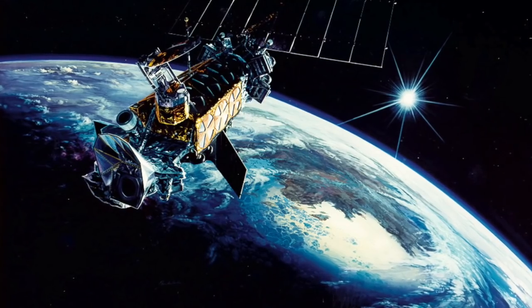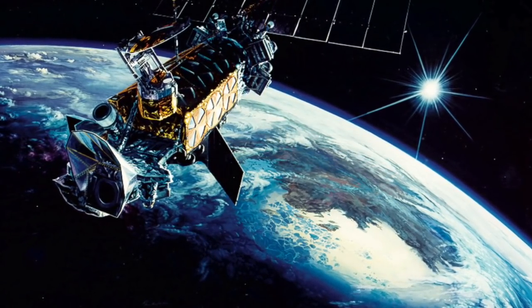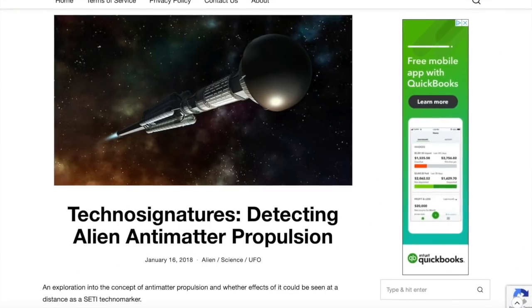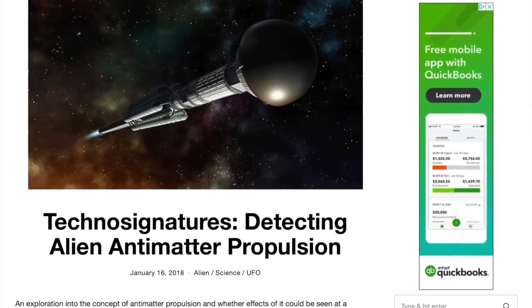When we look at newsintact.com, the headline reads: 'Techno Signatures: Detecting Alien Antimatter Propulsion.' The question then becomes: is this truly alien, or is it not? It might actually be proposed as some type of unknown energy source that the NSA, SIGINT, or NASA is using as cover — or maybe the United States Air Force, the Pentagon.